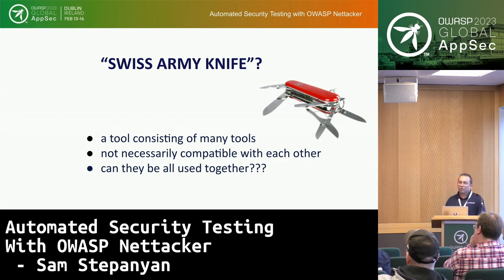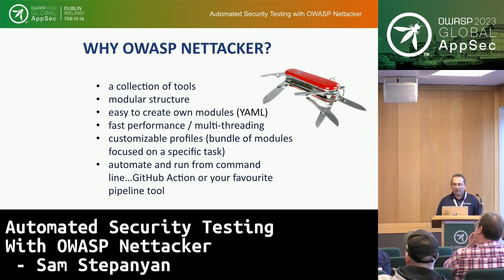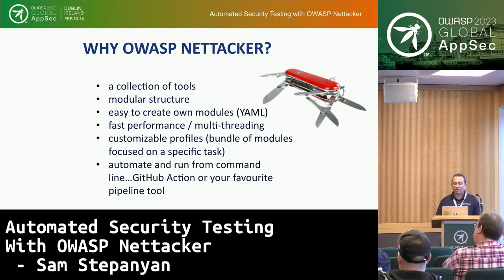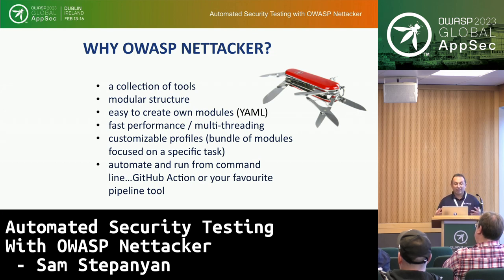OWASP NetTacker can be thought of as a Swiss Army knife kind of tool — it's a collection of tools with a module structure, not necessarily all compatible with each other, but all inside one framework, one shell. It's easy to create your own modules using YAML — no programming required. It's fast-performing and multi-threaded, so you can configure it to go fast or slow. It has customizable profiles, so you can bundle modules together to pull out several tools at once. And of course you can automate it — run it from the command line, GitHub Actions, or your favorite pipeline tool.